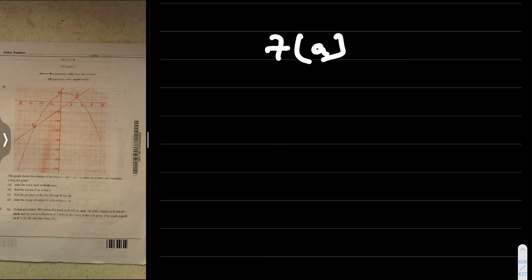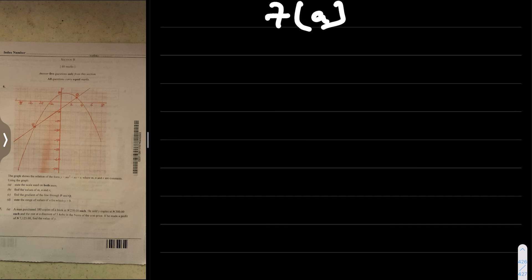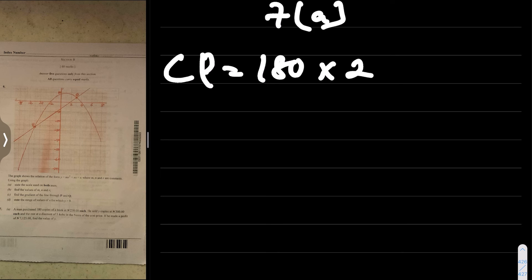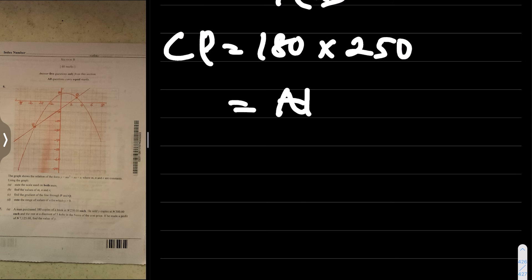A man purchased 180 copies of a book at 250 naira each. He sold y copies at 300 naira each, and the rest at a discount of five kobo in the naira of the cost price. If he made a profit of 7125 naira, find the value of y. The cost price (CP) is 180 times 250, which is 45,000 naira.